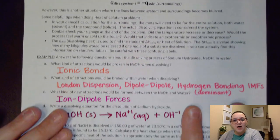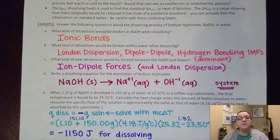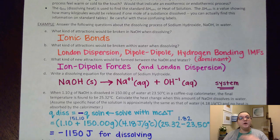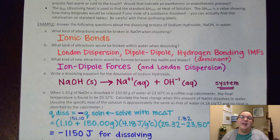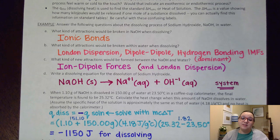Let's go ahead and talk about our example. They are asking us some questions about the dissolving process of sodium hydroxide in water. The first question asks what kind of attractions would be broken in NaOH when dissolving. We need to ask ourselves what kind of substance NaOH is — it's an ionic compound. So for an ionic compound when dissolving, I'm going to be breaking ionic bonds. For ionics, metallics, or network covalents, when I do those changes of dissolving, melting, or boiling, I'm always breaking the bonds that are present.